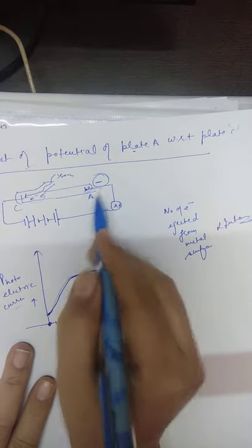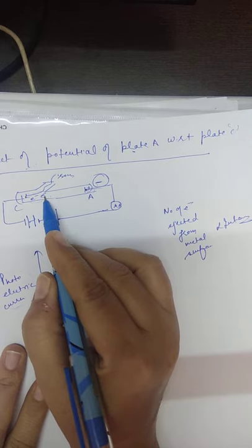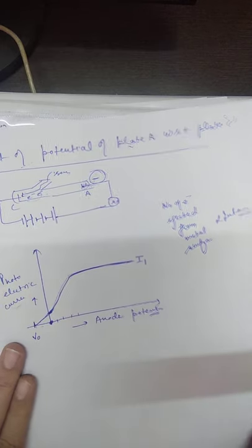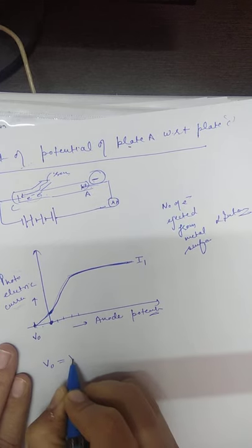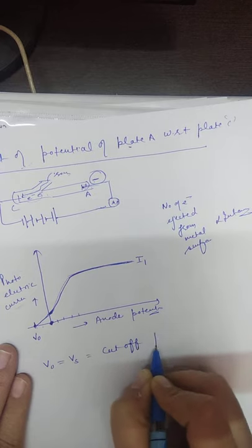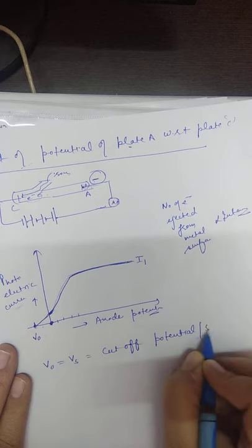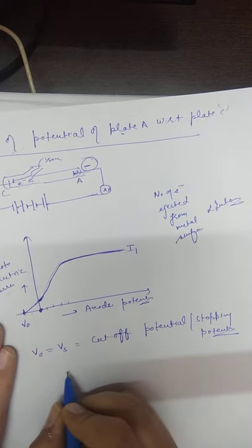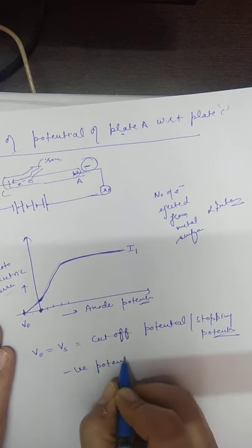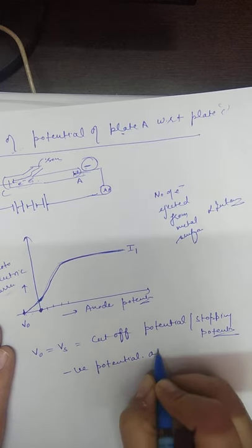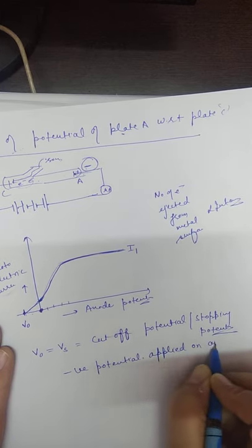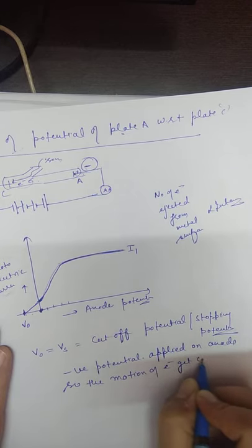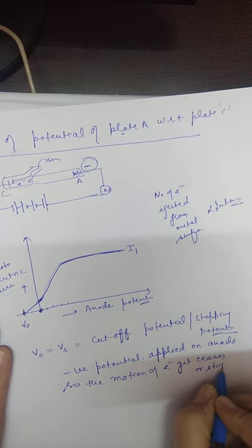If we make the anode potential negative, what happens to the electrons? They are repelled and stop. At a certain value of negative potential, the motion of electrons ceases and the current becomes zero.